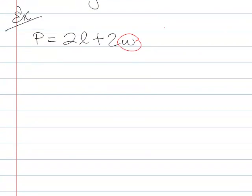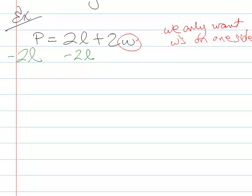So we only want w's on this side. It doesn't matter which side, but I'll just leave them where they are. So that means I need to move my 2l out of the way. So I'm going to move my 2l over there. So I've got p minus 2l equals 2w.